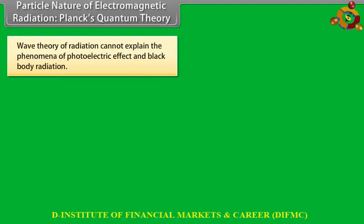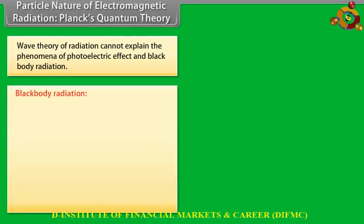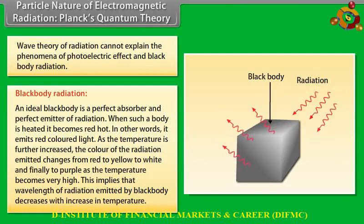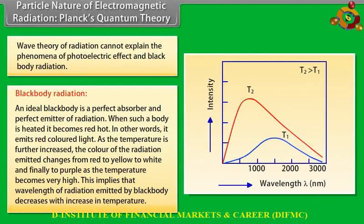Particle nature of electromagnetic radiation — Planck's quantum theory: Wave theory cannot explain photoelectric effect and black body radiation. An ideal black body is a perfect absorber and emitter of radiation. When heated, it emits red light, then yellow, white, and finally purple as temperature increases — wavelength decreases with increasing temperature. At a given temperature, intensity of radiation increases with decreasing wavelength, reaches a maximum, then decreases with further decrease in wavelength.